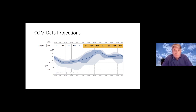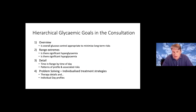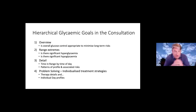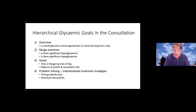It's important to remember what we're trying to do in a consultation around glycemia. We tend to take a broad focus and then ever more detailed focus in. Initially we want an overview — overall glucose control: is it appropriate to minimize long-term risks? Are there major issues? We then tend to look at range extremes: specific hypo or hyperglycemia problems, ketoacidosis, admissions with severe hypo, etc.